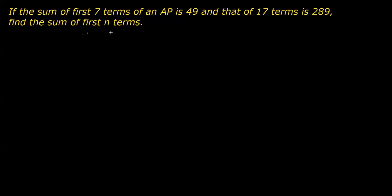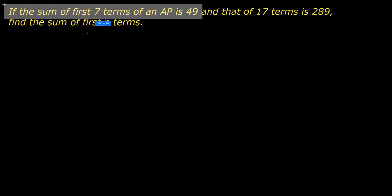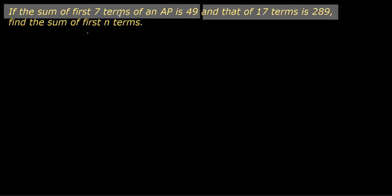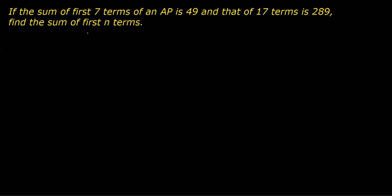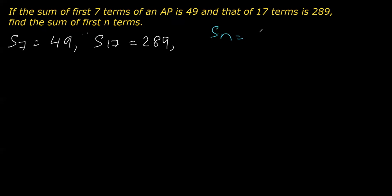This is one question taken from the chapter arithmetic progression. The question says that the sum of first seven terms of an AP is 49 and that of 17 terms is 289, and we have to get the sum of first n terms. Let's write the information first. We have S7 given as 49 and S17 given as 289. Clearly, for solving this we will be using the formula of Sn which is n/2 bracket 2a plus (n minus 1)d.